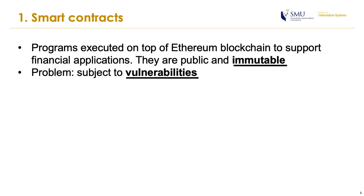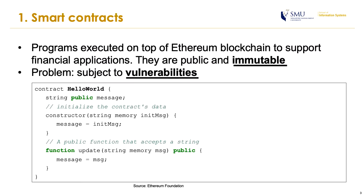As you may know, smart contracts are programs executed on top of the Ethereum blockchain to support many financial applications. There are two noticeable properties of smart contracts: public and immutable. Immutable means that you cannot modify the source code of a smart contract once it is deployed to the blockchain. Here is an example smart contract written in Solidity, whose syntax is similar to JavaScript. This hello world smart contract has two functions: a constructor that initializes data, and an update function that assigns a new string to the global variable message.